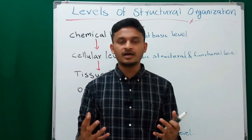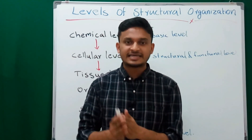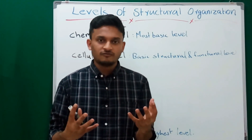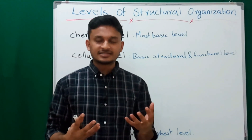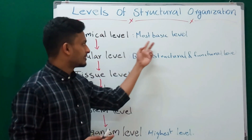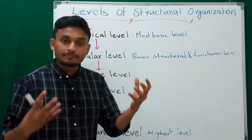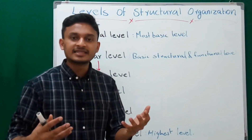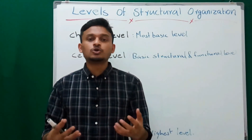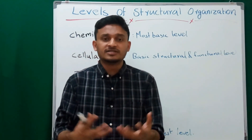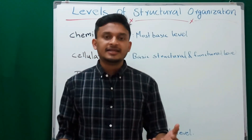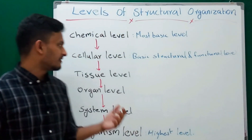Before going into each level, think about a book — the human body is just like a book. The chemical level is the most basic level and represents the letters in the book. At the chemical level, two or more atoms join together to form molecules like carbon, oxygen, nitrogen, etc.